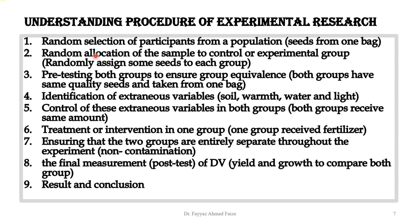Step two is random allocation of the sample to the control or experimental group. This means we randomly assign participants to each group — just as we took seeds from the bag and divided them into two parts, calling one the experimental group and the other the control group. This is done randomly so that we are not biased in assigning groups.